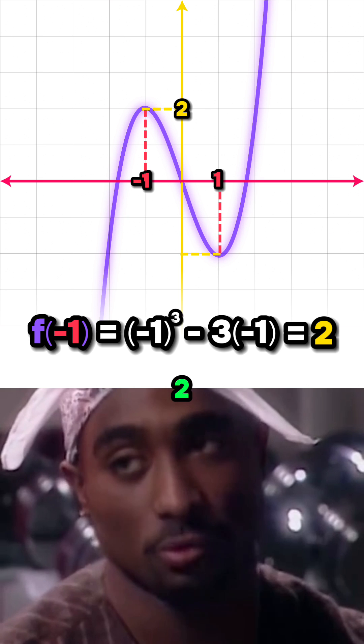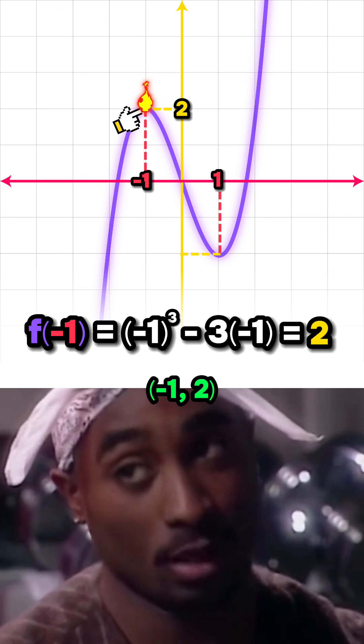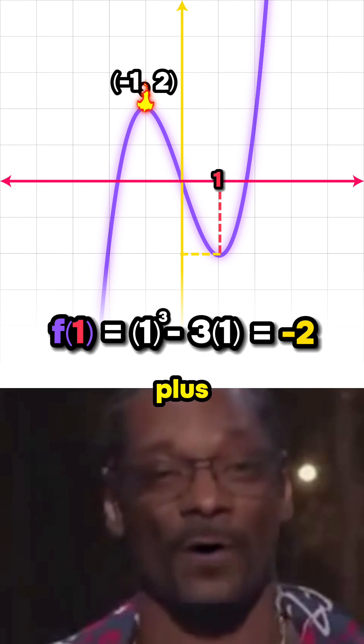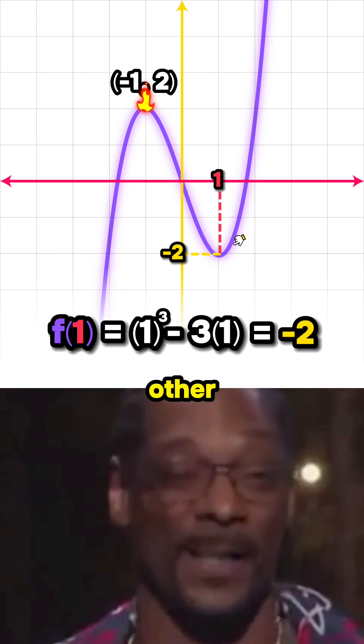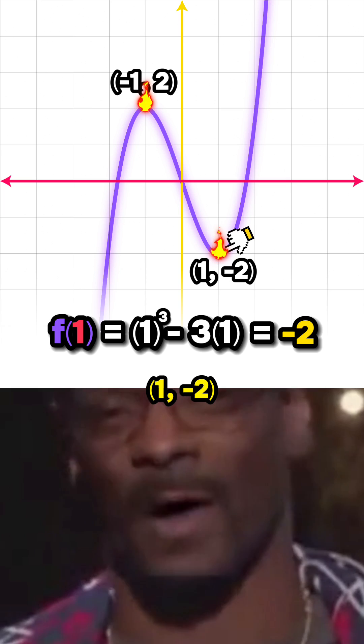Plugging minus 1 in gives us 2, so this stationary point on the left is minus 1, 2. And plugging plus 1 in gives us minus 2, so the other stationary point is 1, minus 2.